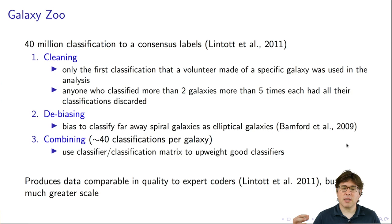The third step is combine. How do you combine the 40 million classifications of a million galaxies, roughly 40 classifications per galaxy? How do you combine that into a consensus? You could, for example, take the label that was most commonly used for a specific galaxy. What they ended up doing is something slightly more complicated. They had the idea that some people might be better classifiers than others. So they tried to simultaneously estimate the label of each galaxy and estimate the accuracy of each classifier. And they tried to assign more weight to the people who are good classifiers. What they found is that this three-step procedure with cleaning, debiasing, and combining was able to produce a dataset of comparable quality to that produced by expert coders, but at a much greater scale. And by coders here, what we mean is people who assign labels to galaxies, not computer programming coders.